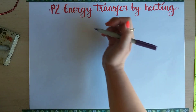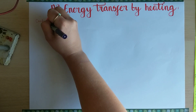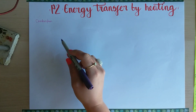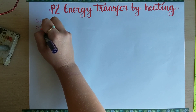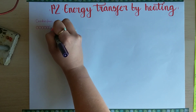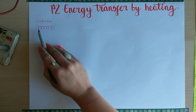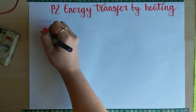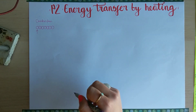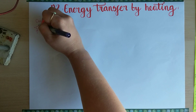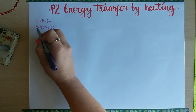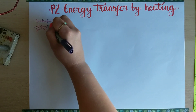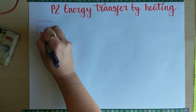First of all we need to think about conduction. Conduction is a process of transferring thermal energy and we usually think about conduction happening best in solids. Solids are represented with particles that are very close together, touching in a regular formation. If we apply a heat source at one end, these particles would start vibrating more, and because the particles are so close together, the vibrations get passed along.